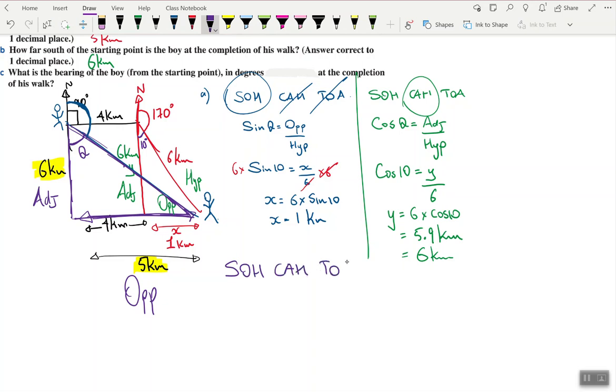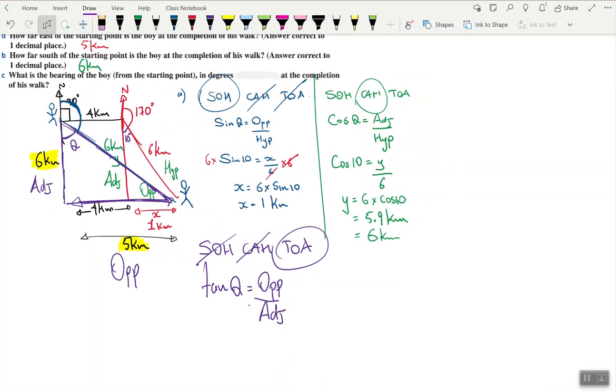And so tan of the angle theta is equal to opposite over adjacent. So tan theta is 5 over 6. And whenever we are looking for the angle, we do the inverse, so tan inverse of 5 over 6.